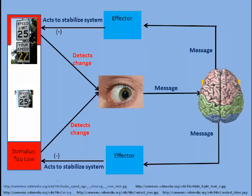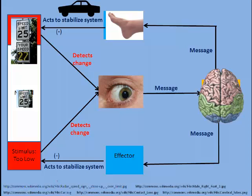Because we're speeding, the brain would send a message to the foot to ease off on the gas pedal and slow the car down, and hopefully that would return the speed back to the normal level. And as long as we don't stray out of that level, the monitor won't be sending a message to the control center.